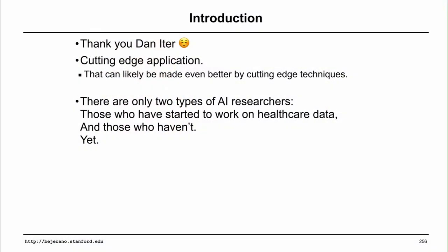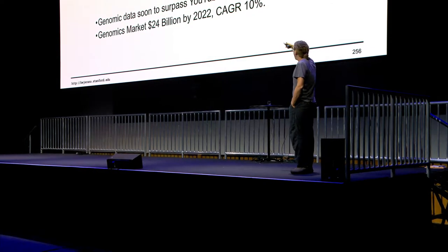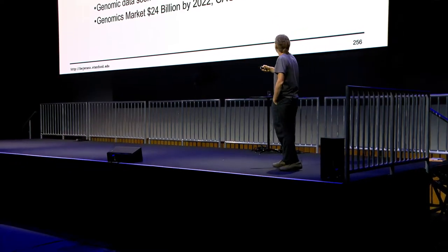Incoming PhD students at Stanford, I tell them the following: there are only two types of AI researchers in the world now — those who work with healthcare data and those who haven't worked with healthcare data yet. Genomics data is soon to surpass YouTube in the amount of bits you can share. The market size is wonderful, probably $24 billion compound annual growth rate of two digits. Companies love this, academics love this, and healthcare has become the biggest business in the U.S., surpassing retail. So it's big business. I'll give you one slide of Genomics 101 so the talk is self-contained.